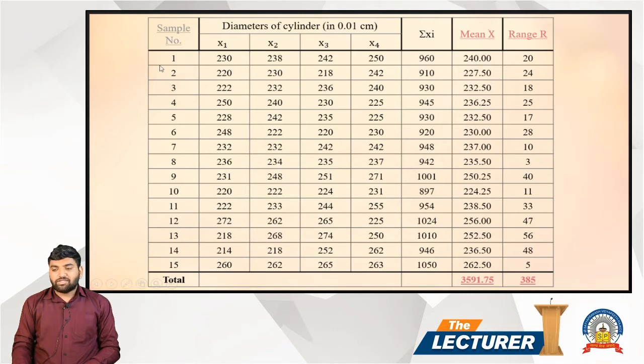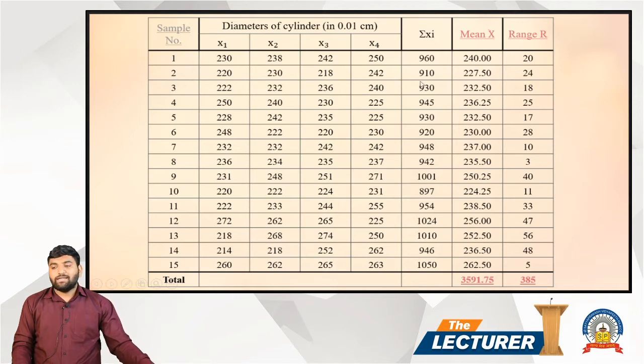For sample number 2, the four observations are: 2.20, 2.32, 2.18, and 2.42, giving a total of 9.10.